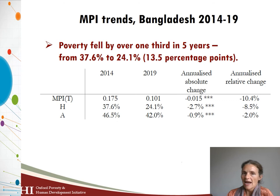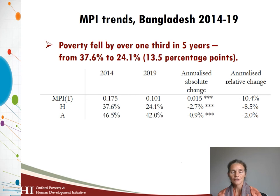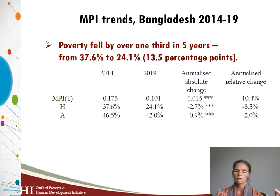Let's look at a case study. On the OFI website, as Usha mentioned, there is a country briefing for the Global MPI, and for each of the 75 countries, a country briefing for trends over time. In Bangladesh, using data from the 2014 to 2019 demographic and health surveys, MPI fell by more than a third — from 0.175 to 0.101. The incidence fell by over a third from 37.6% to 24.1%, with intensity declining as well. All three changes were statistically significant at the 99% level.